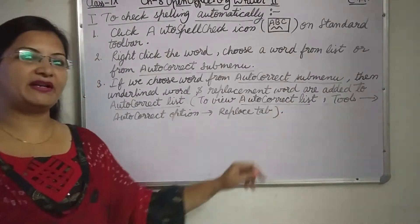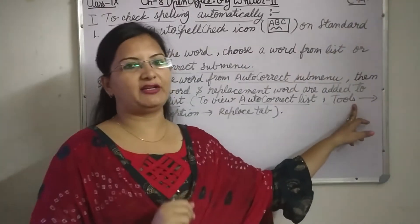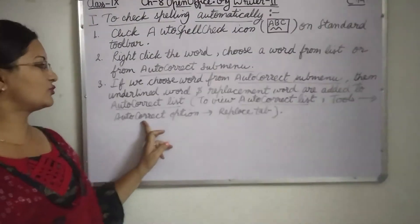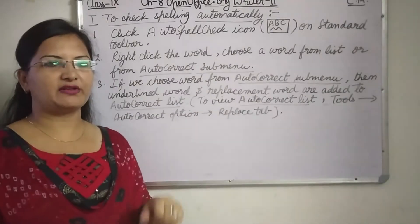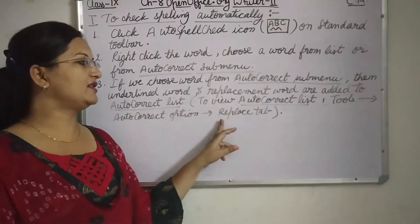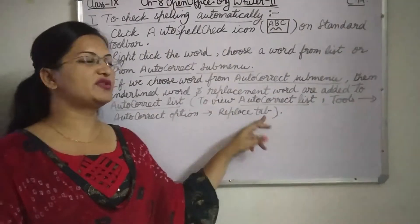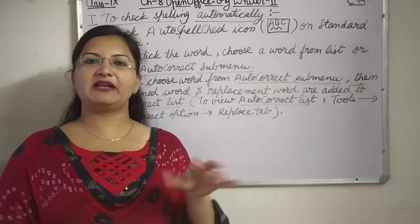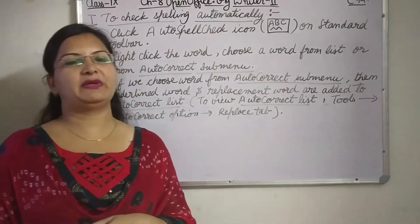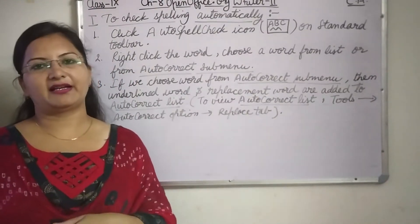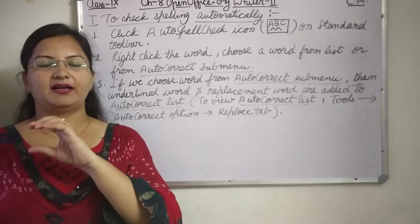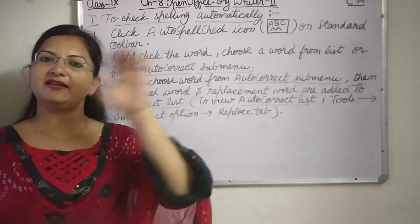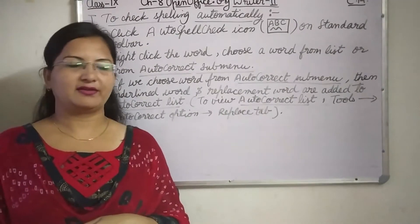To open the auto correct list, click on Tools in the menu bar, then choose the auto correct option. A dialog box will appear — go to the Replace tab, where you will find the list of corrections showing the underlined word and the new word that was chosen.